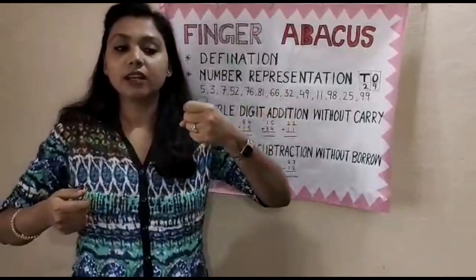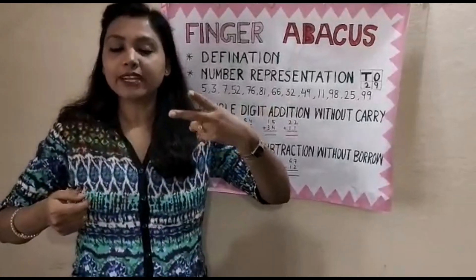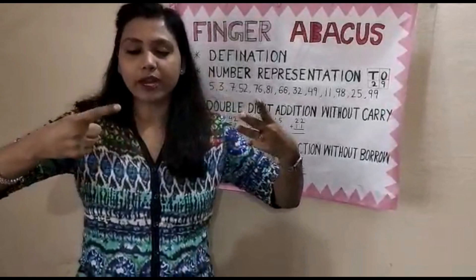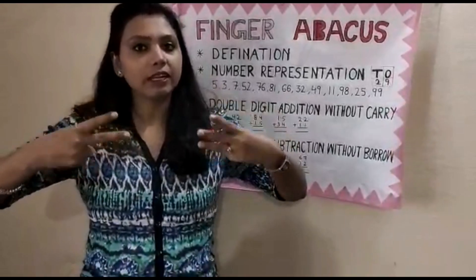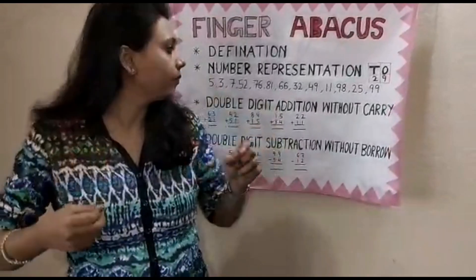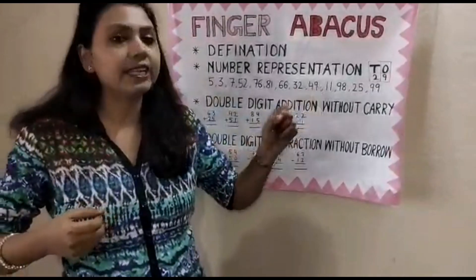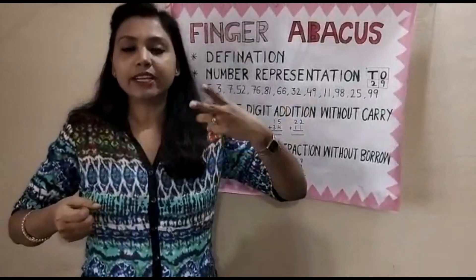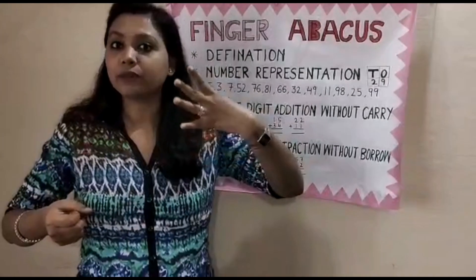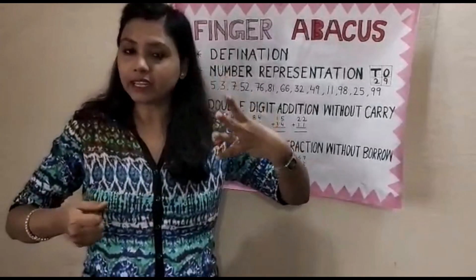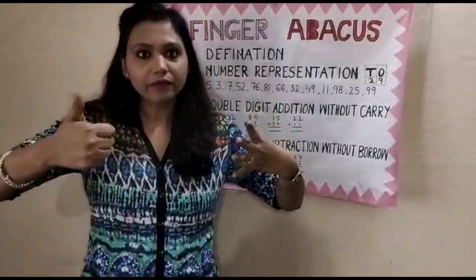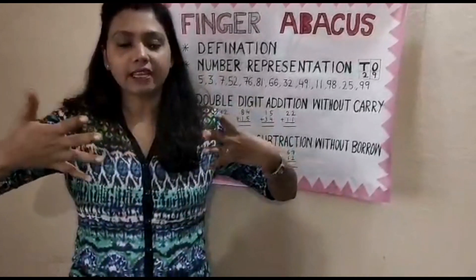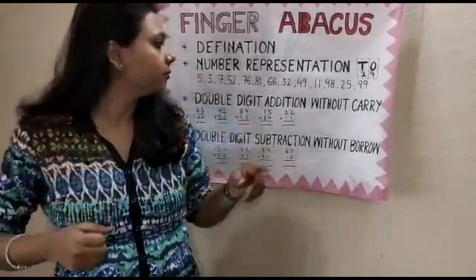For 32: left hand shows 10, 20, 30, and right hand shows 1, 2 — that's 32. For 49: left hand shows 10, 20, 30, 40, and right hand shows 5, 6, 7, 8, 9 — that's 49.